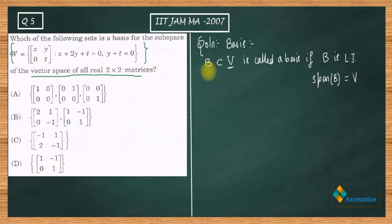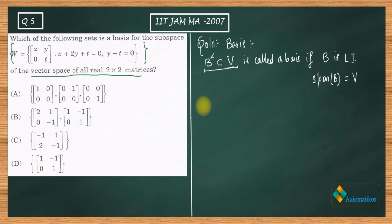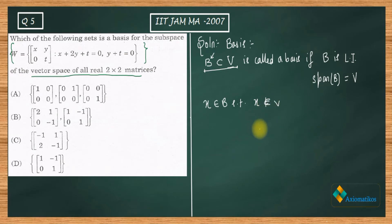This is the definition of basis. Now an important property: B can be called a basis only if it is a subset of V. B should not contain any element which is not inside V. If there exists x belonging to B such that x is not inside V, then we cannot call that set B a basis. This is what is happening in this question.